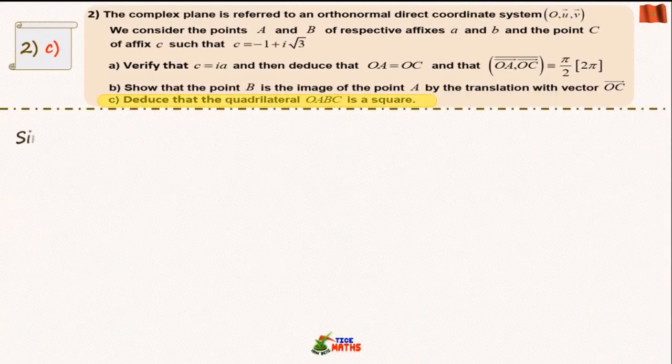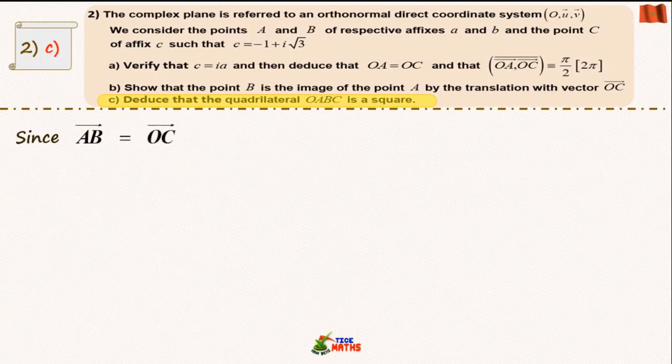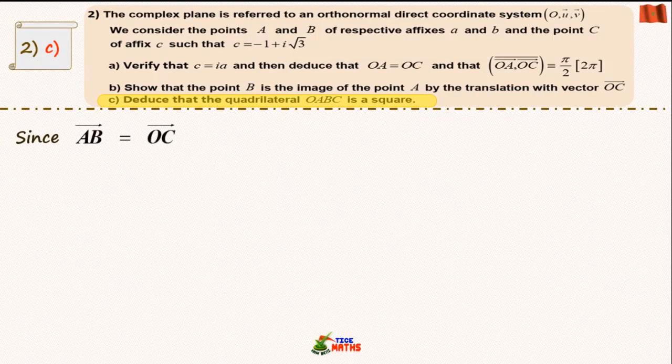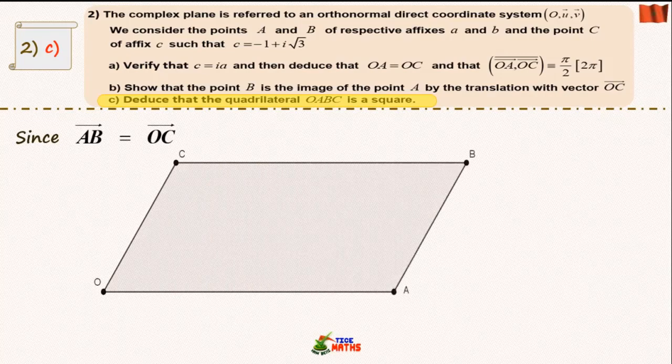Sub-question 2c: In the previous question we saw that vector EB equals vector OC, so we deduce that the quadrilateral OABC is a parallelogram.